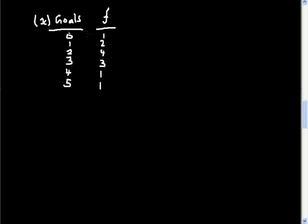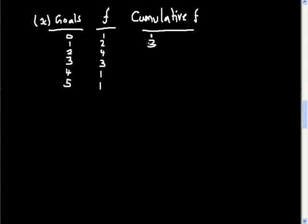To find the median from the frequency table, it helps to add a cumulative frequency column. You keep adding frequencies one after the other: 1, then 1+2=3, then 3+4=7, then 7+3=10, then 10+1=11, then 11+1=12. The median is the middle value — with 12 entries, 12 divided by 2 equals 6, a whole number.